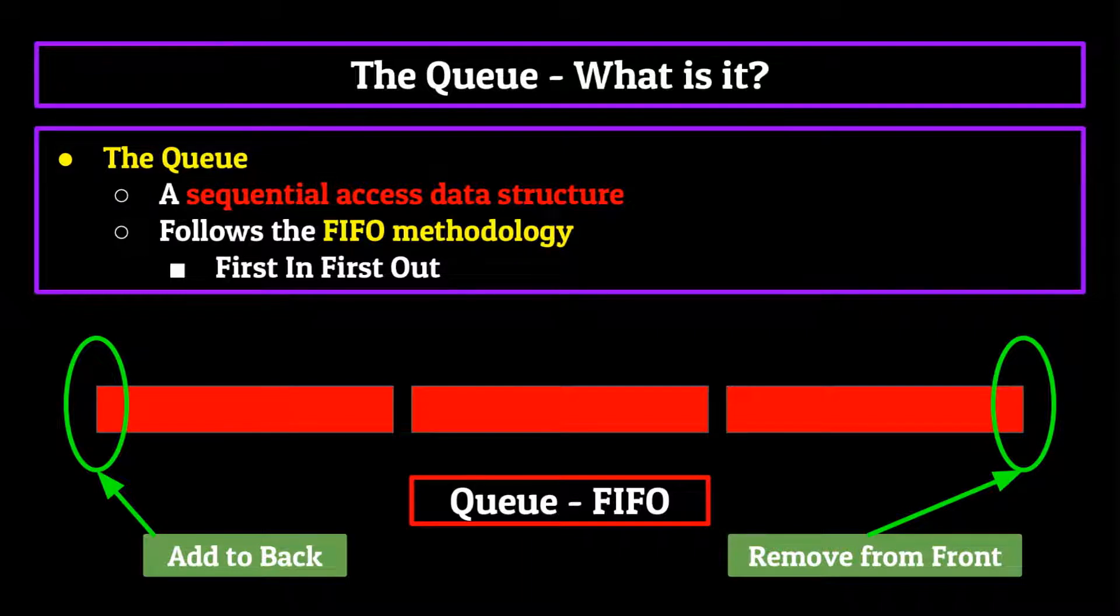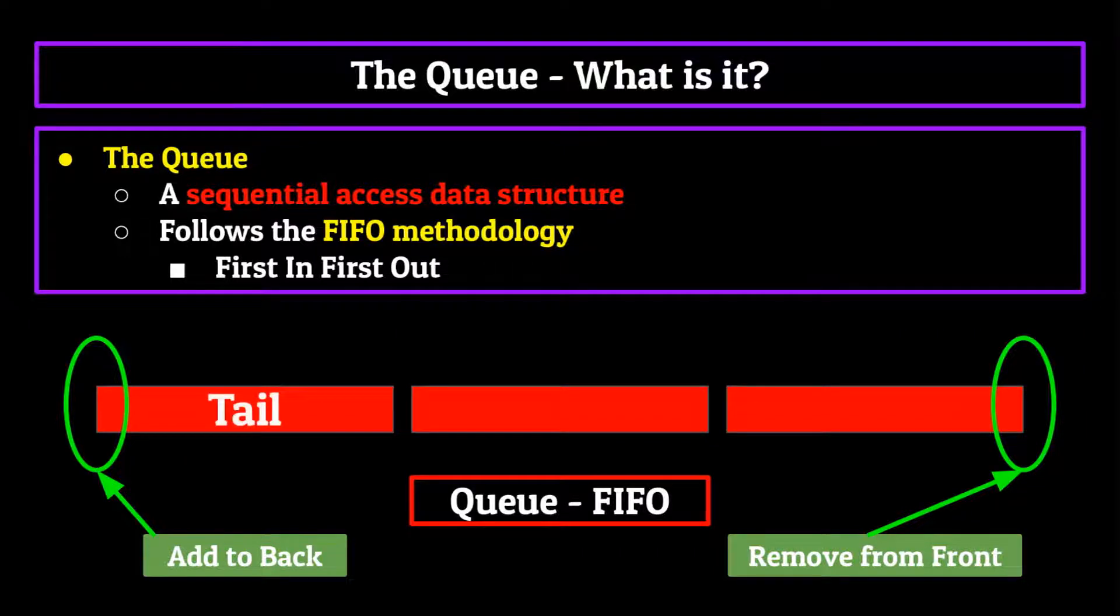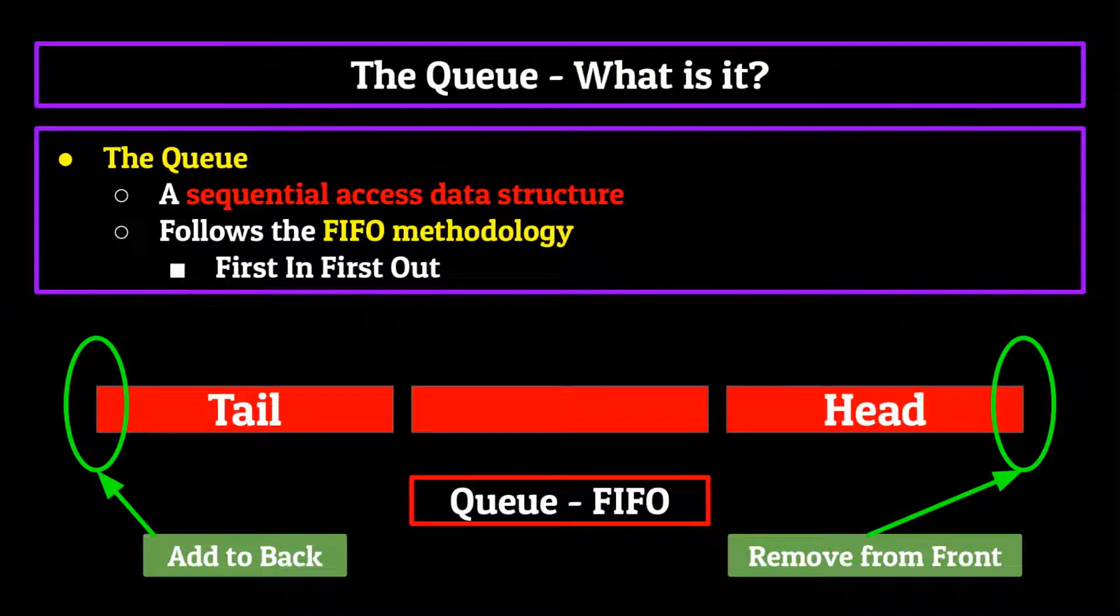If we're getting in line for a roller coaster or an amusement park ride, we don't get in line at the front, we get in line at the back, and then as people get on the ride, we slowly move up to the line until we reach the front, and then we're allowed on. Queues act in the same way. We add elements to the back, also known as the tail of the queue, and then remove them from the front, also known as the head of the queue. This allows us to make sure that we 100% follow the FIFO methodology.